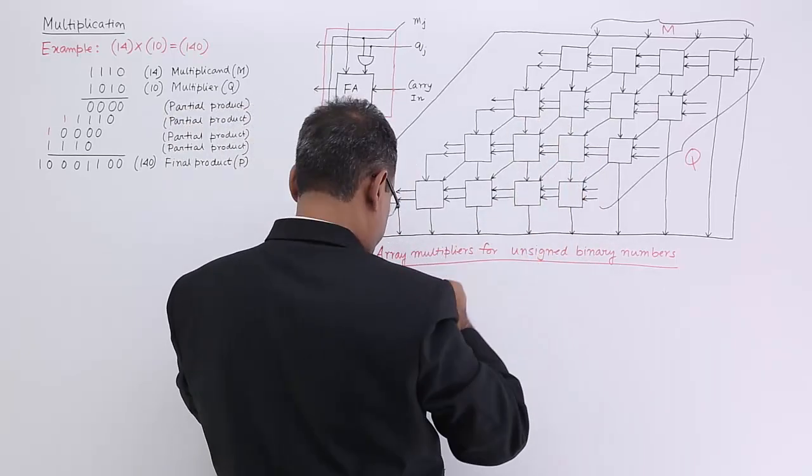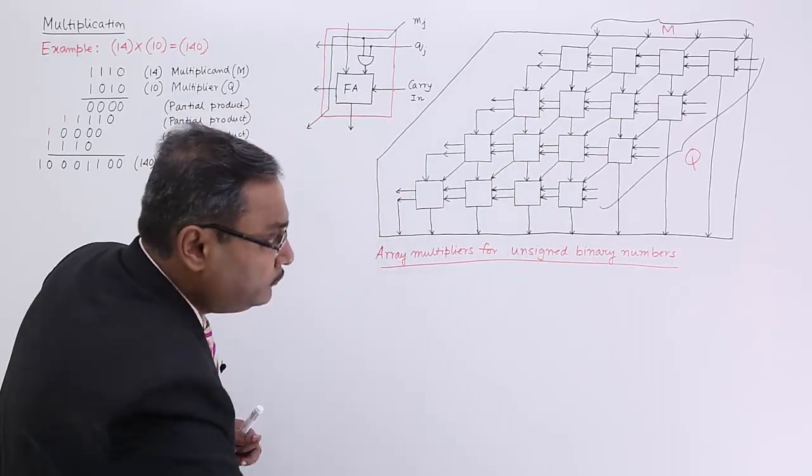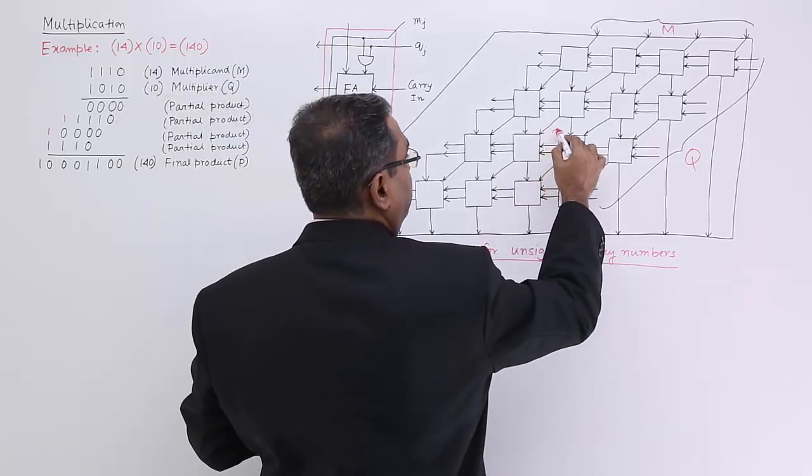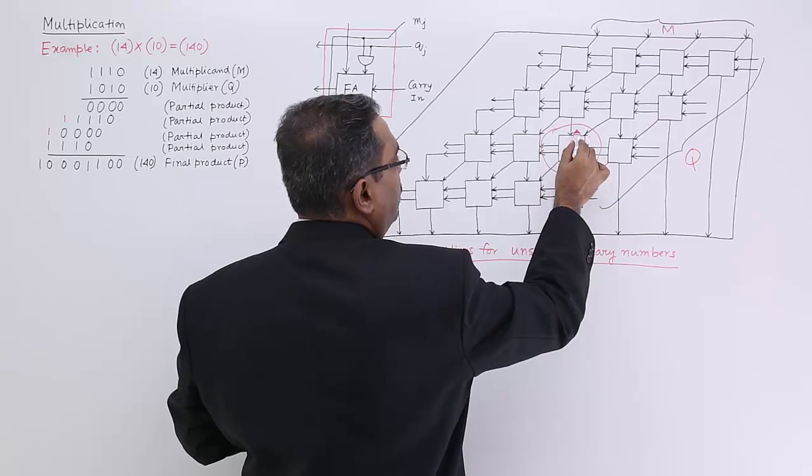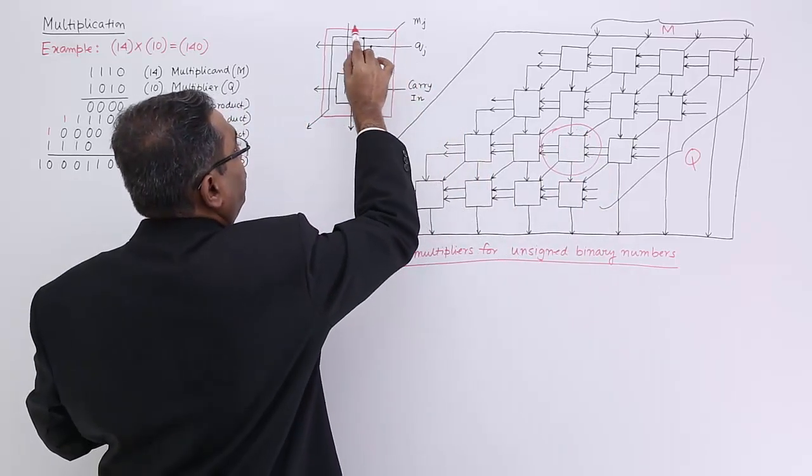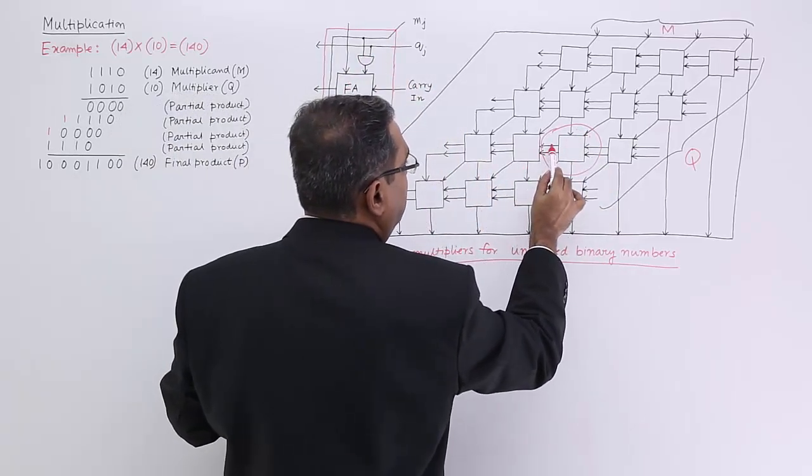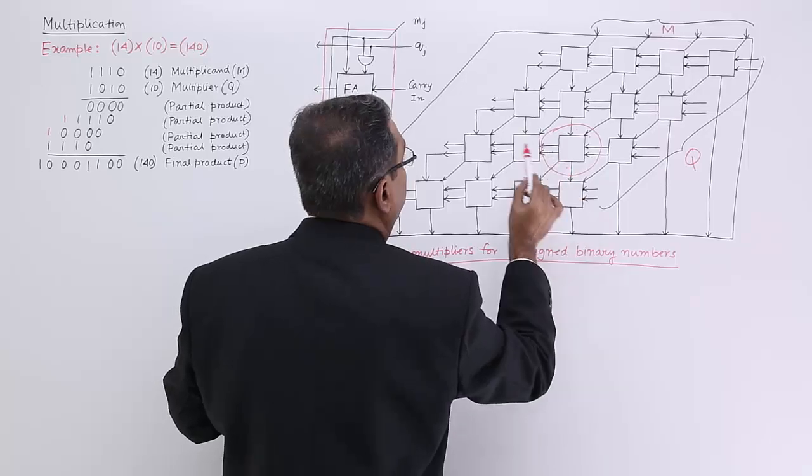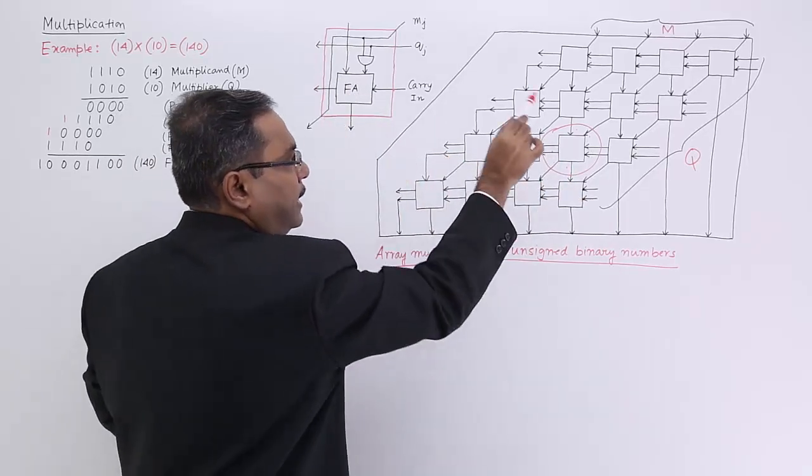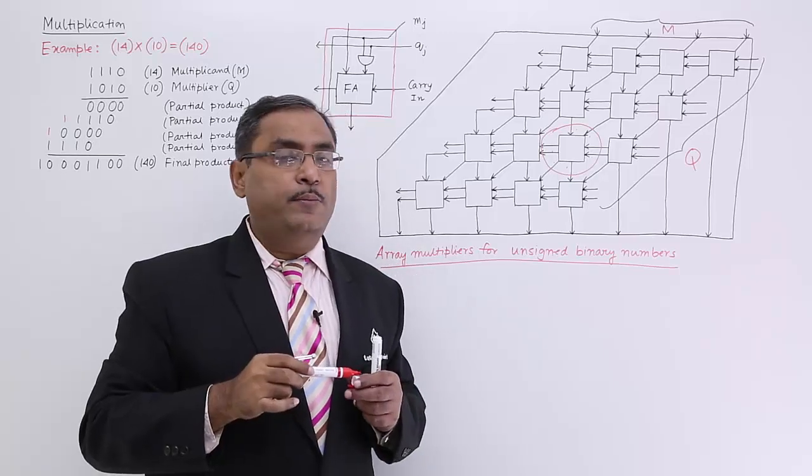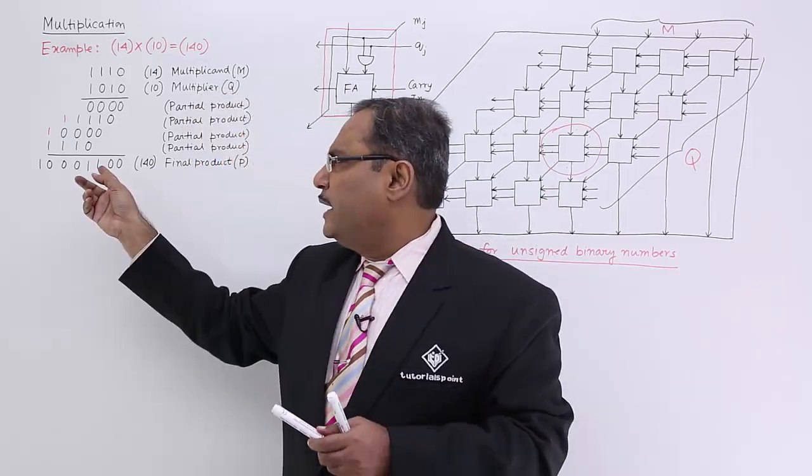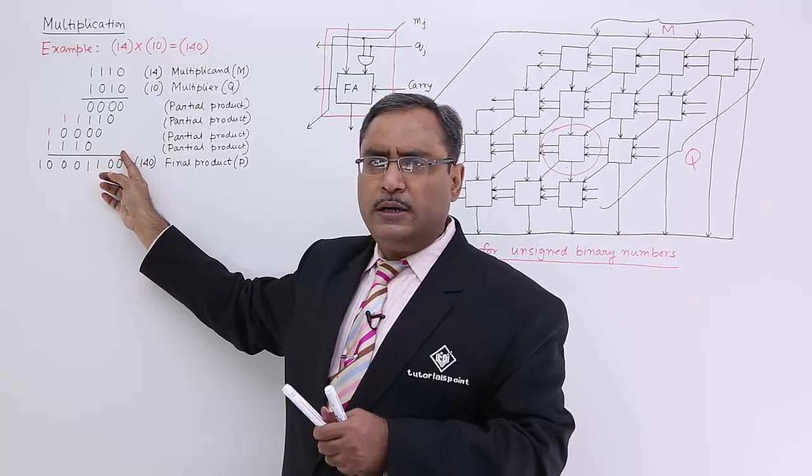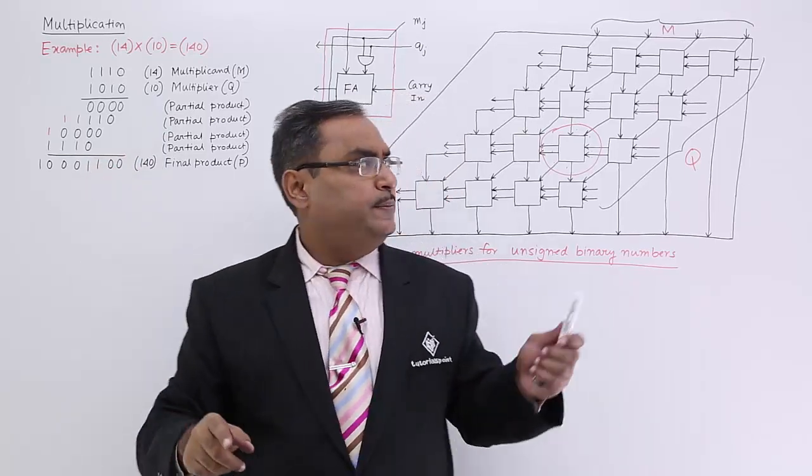Take any one of them. I'm just considering any one of them. How many input lines are there? 4 input lines. 1, 2, 3, 4. How many output lines are there? 1, 2, 3, 4. So 4 output lines are there and it has been depicted in the same way. And if you want to get into the details, just look at this multiplication, whatever you have done, the same process has been followed here.